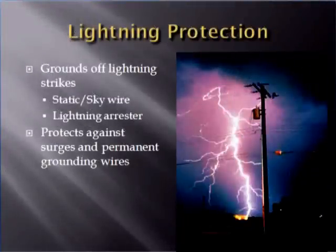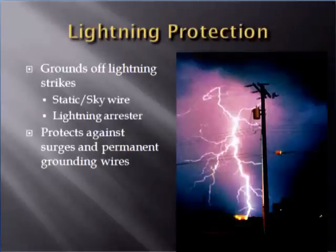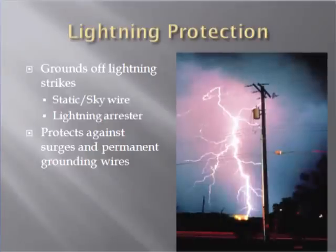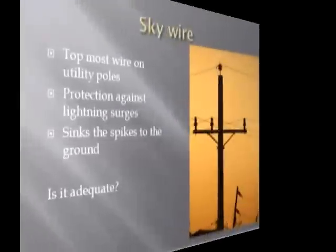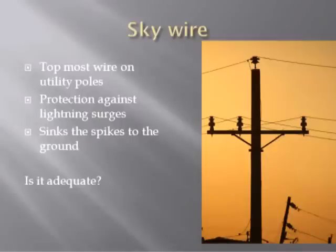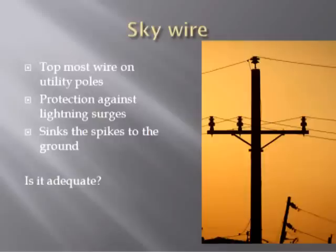The most basic part of line protection is lightning protection. Poles are high in the air and are prone to lightning strikes. A flashover damages insulation and causes a permanent ground fault. Two methods are used to avoid this: a sky wire and a lightning arrester. The sky wire, or static wire, is the utmost top line of the utility pole. This wire bleeds off lightning surges from power lines when lightning strikes during a thunderstorm. The static wire is connected to the grounding conductor.